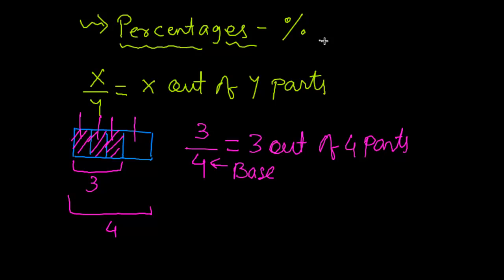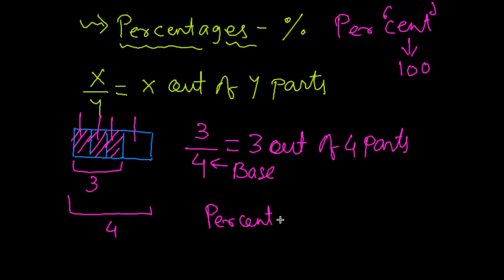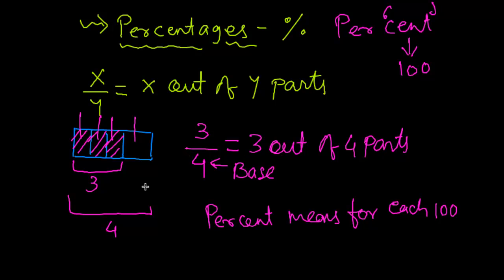Percentages — 'per' and 'cent'. This 'cent' means hundred. So 'per cent' means for each hundred. Percentage effectively means for each hundred. So for each four, there will be three chocolates that we are going to consider. Then for each hundred chocolates, how many of them are we going to consider? We are simply going to change the base from four to hundred.